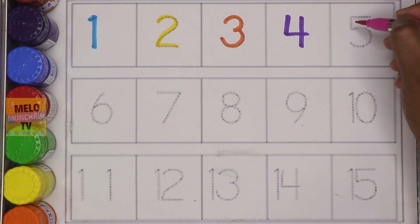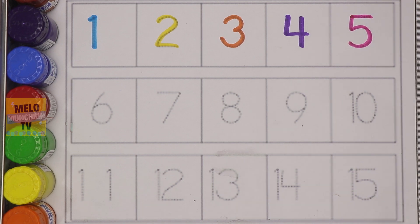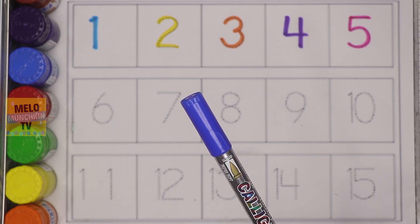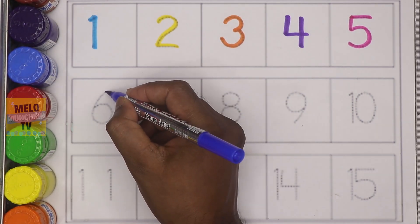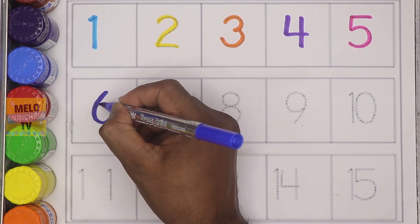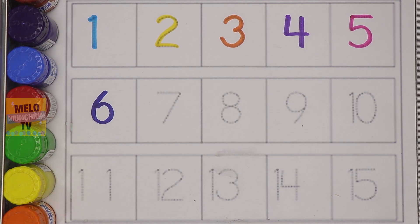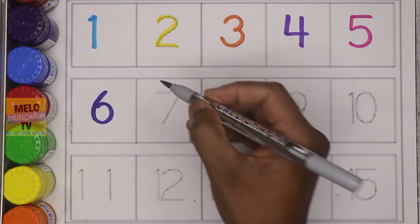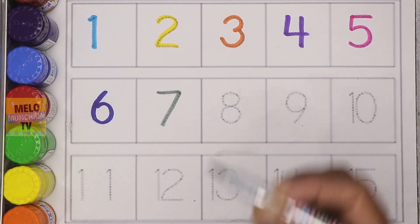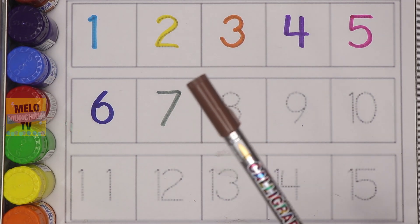Pink color - this is number five: F-I-V-E, five. Dark blue color - this is number six: S-I-X, six. Gray color - number seven: S-E-V-E-N, seven.